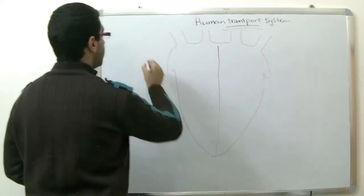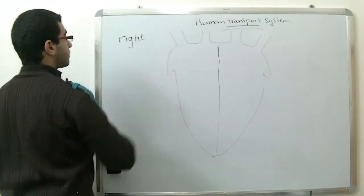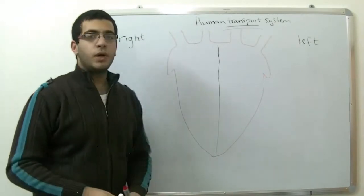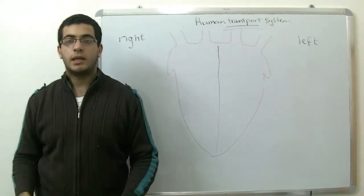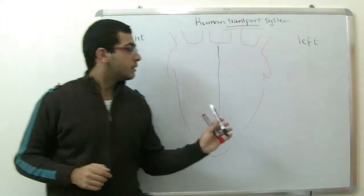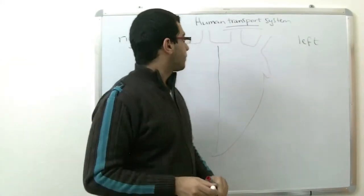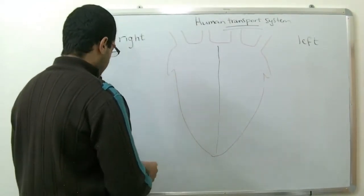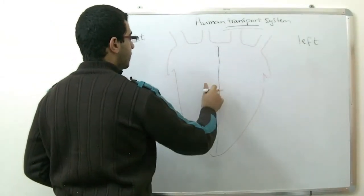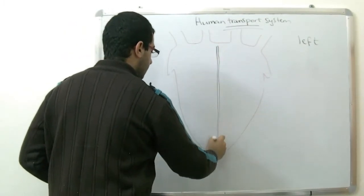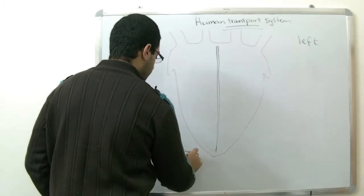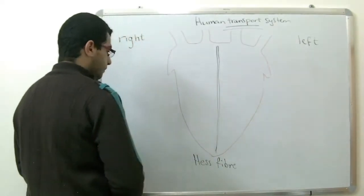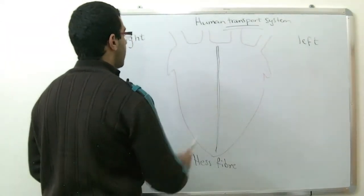We have two halves inside the heart. The first one is the right and the second is the left. We are drawing the heart of somebody that is facing us. This is my right side and this is my left side. The right side is separated from the left side by a muscular fiber which is called HES fiber. This fiber separates the two halves of the heart.